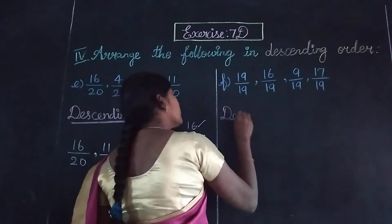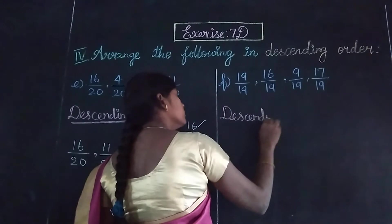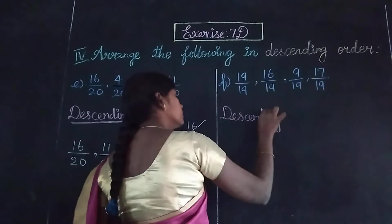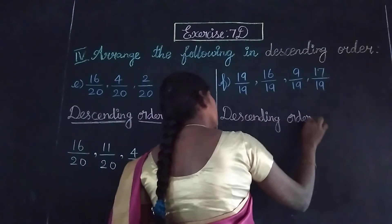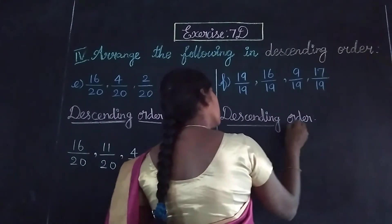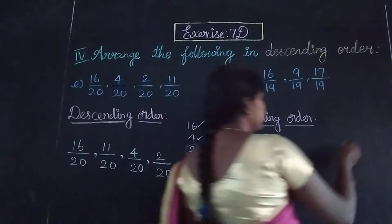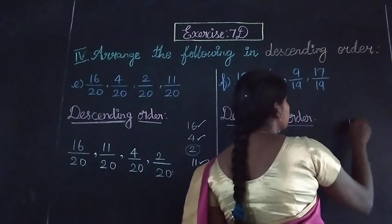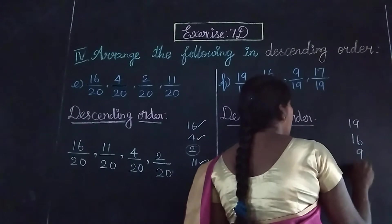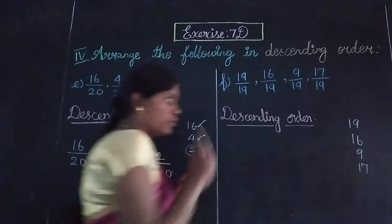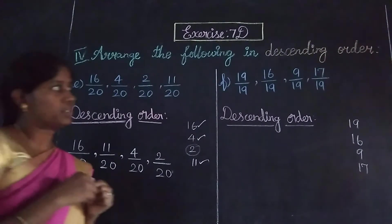The denominators are the same, so we compare the numerators: 19, 16, 9, and 17. The greatest numerator is 19. So the first fraction is 19 by 19.